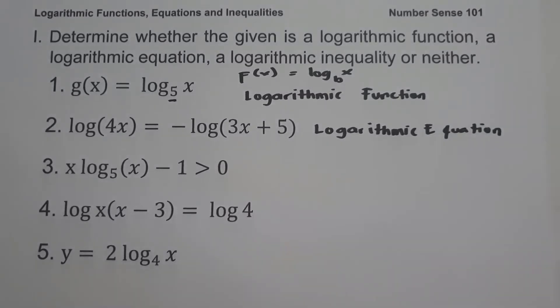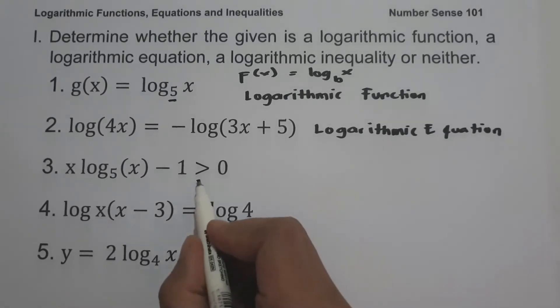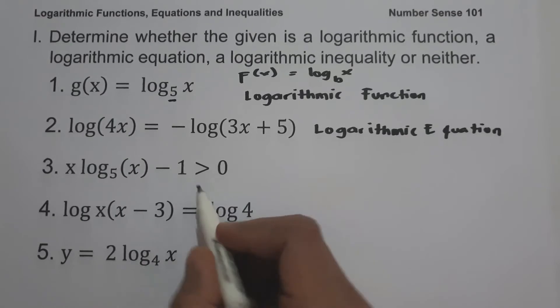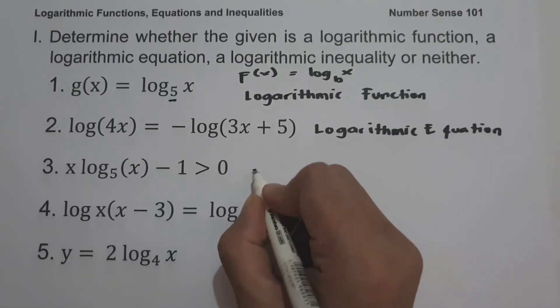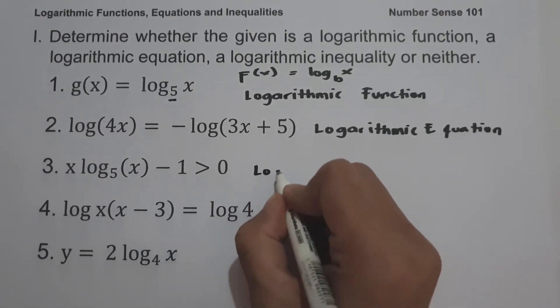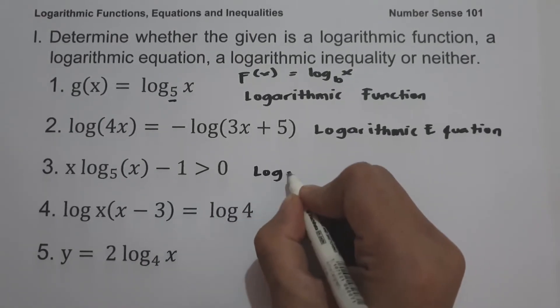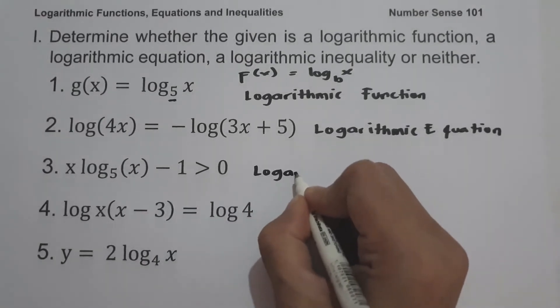On example number 3, x · log_5(x) minus 1 greater than 0. Since we have an inequality involving logarithms, therefore, this one is a logarithmic inequality.